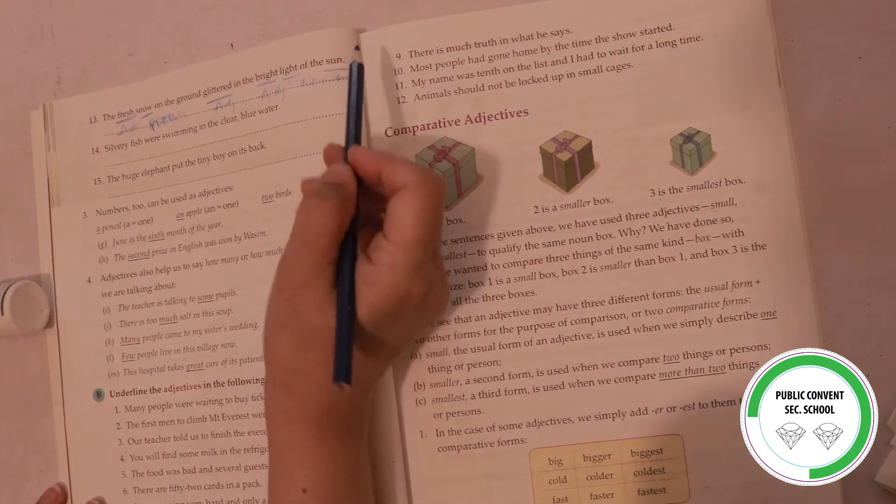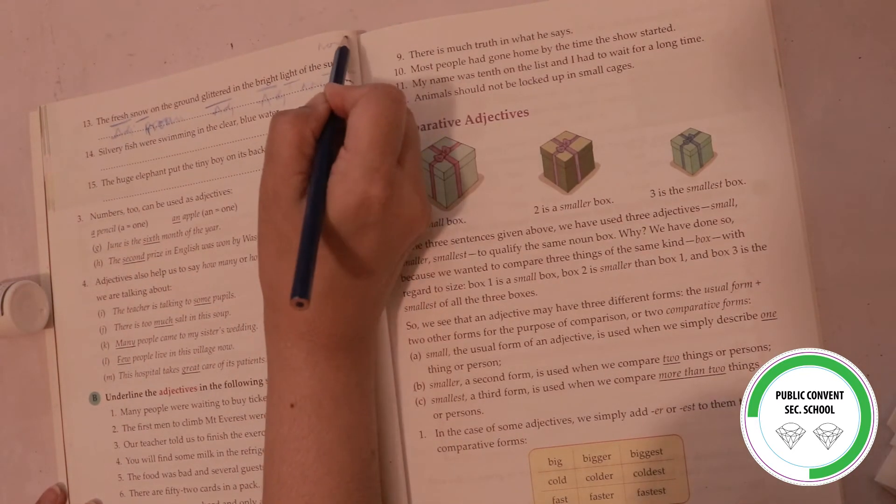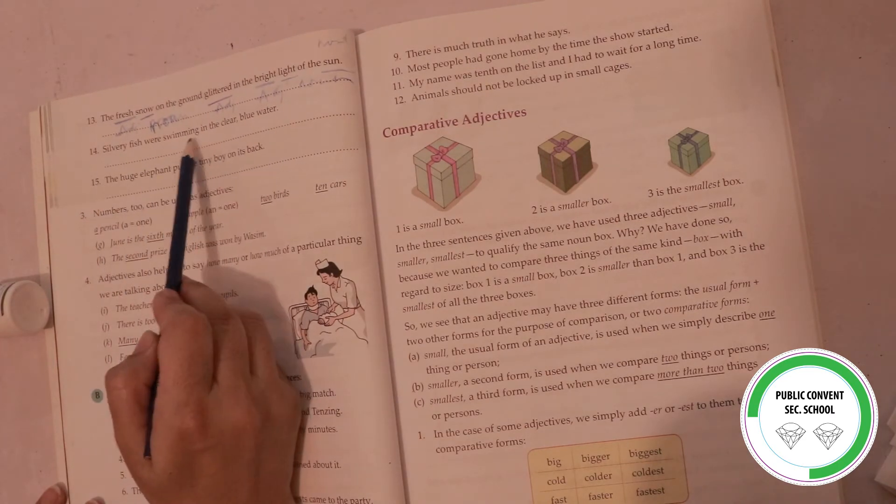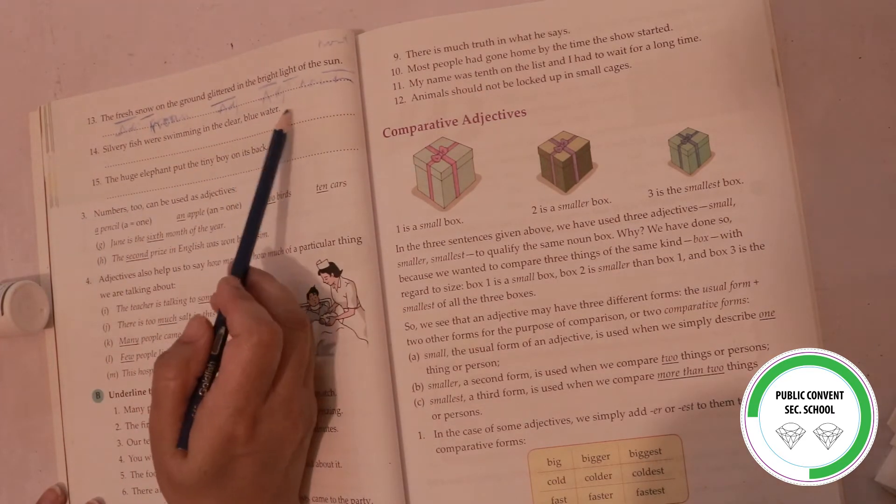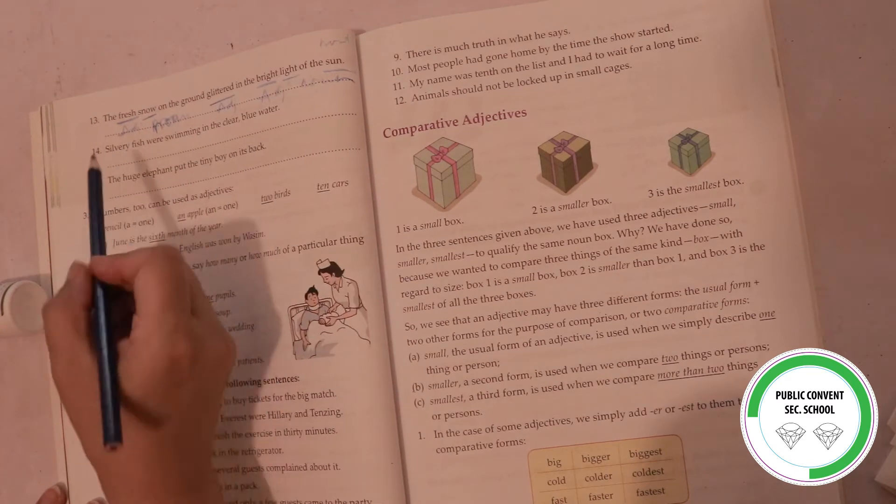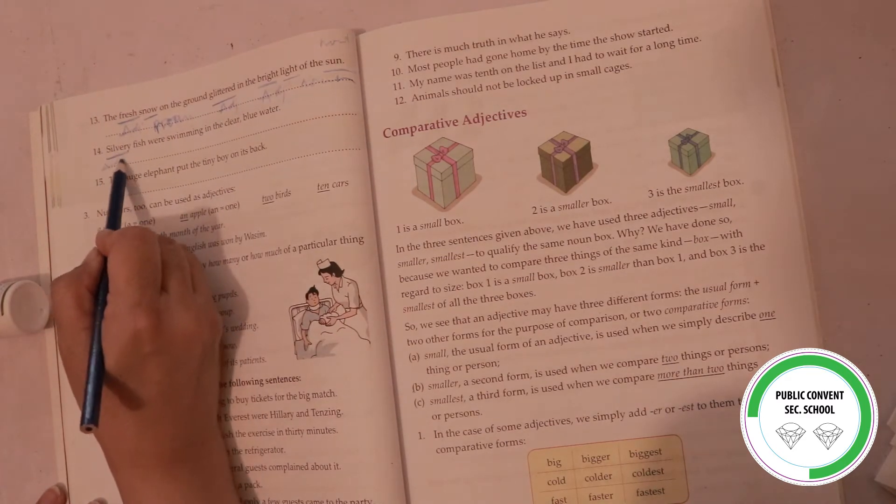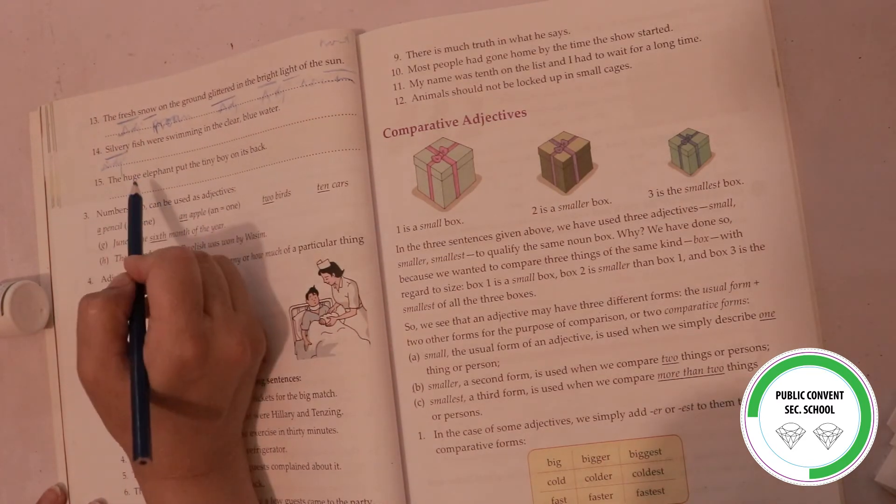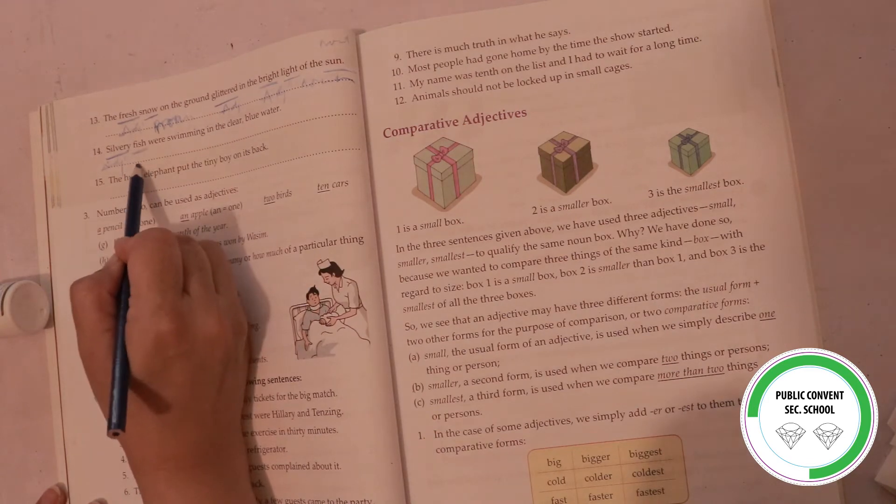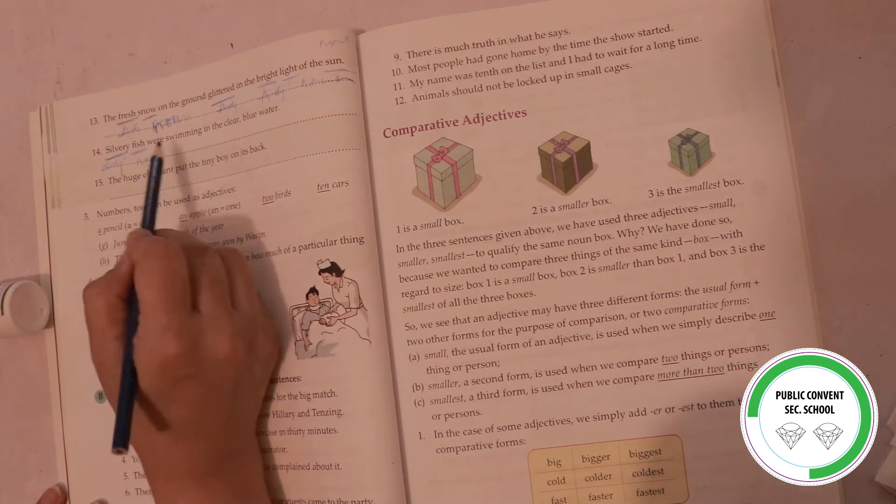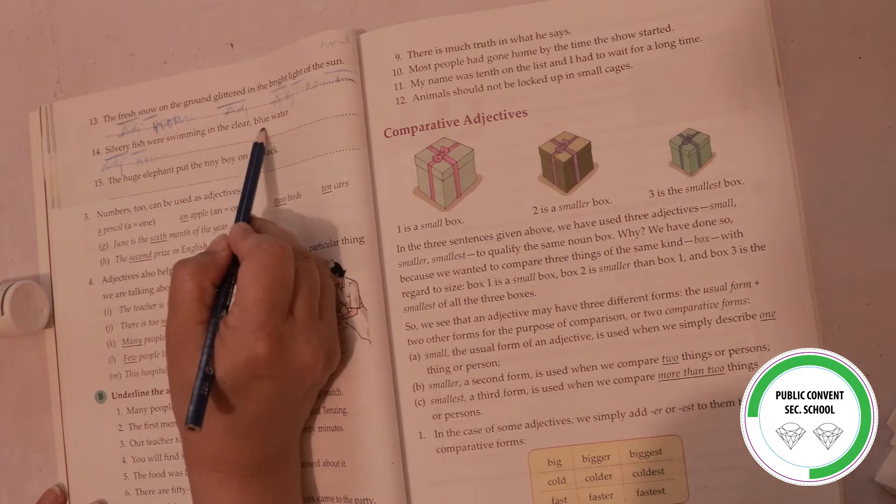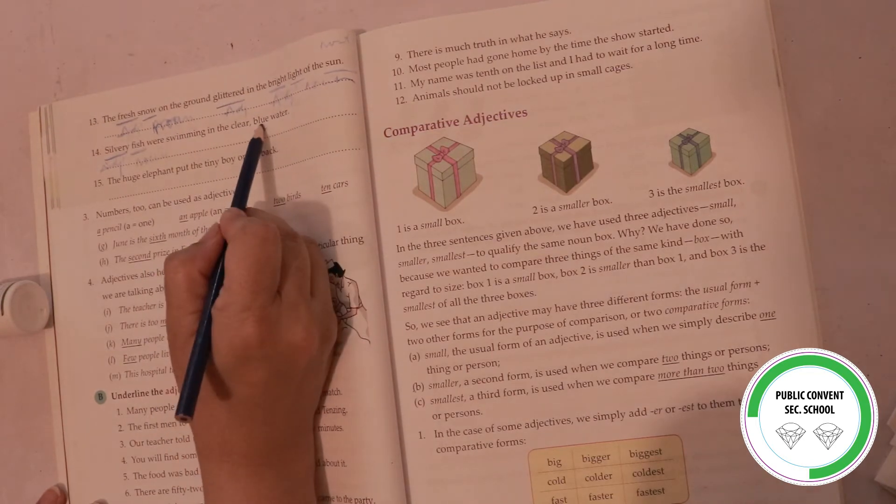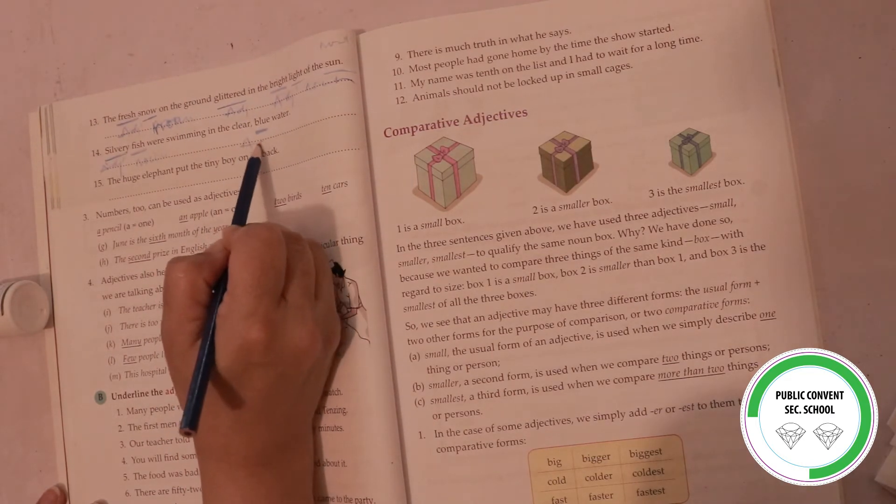Silvery fish were swimming in the clear blue water. Silvery is adjective because silvery tells us about the fish. They were swimming in the clear blue water - blue is adjective and clear is adjective. There are three adjectives: silvery, clear, and blue.